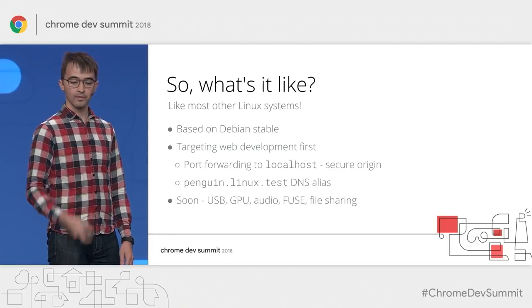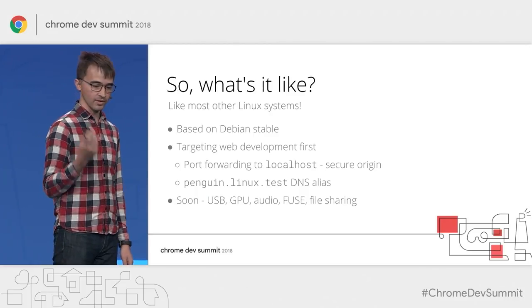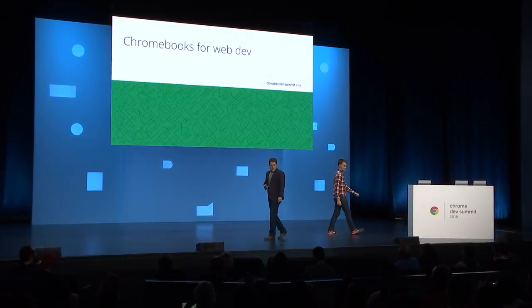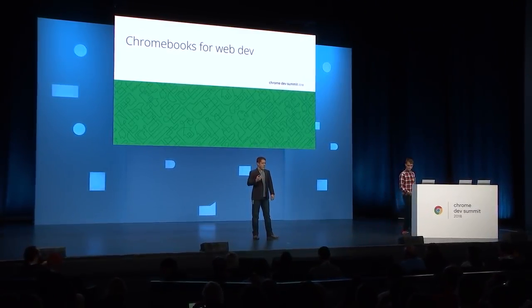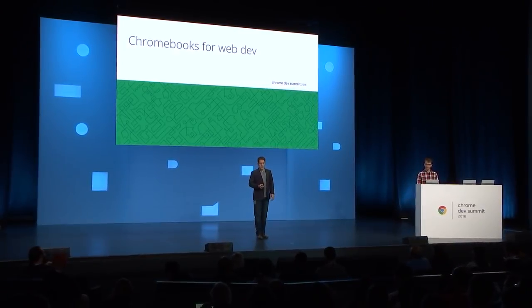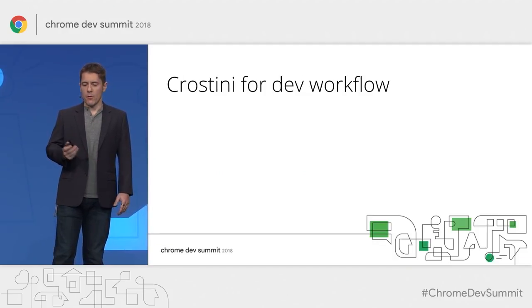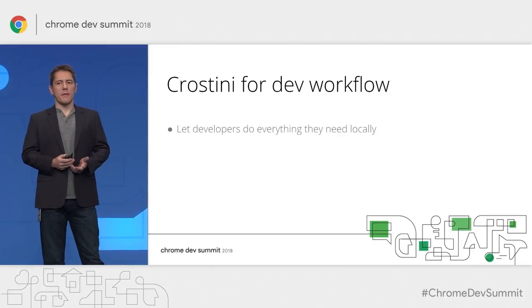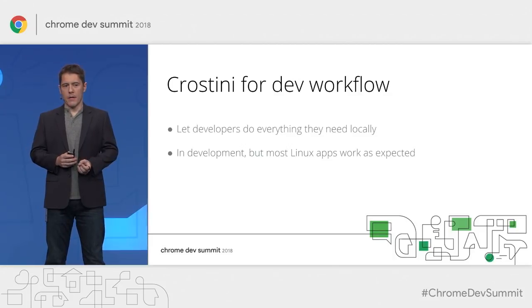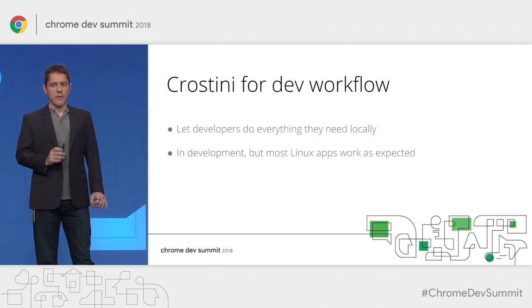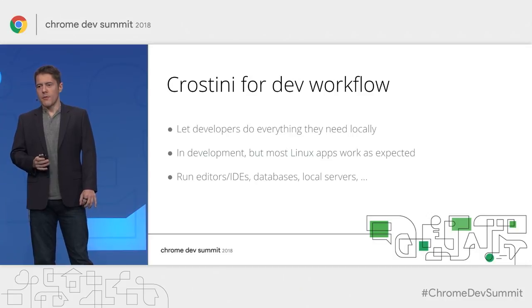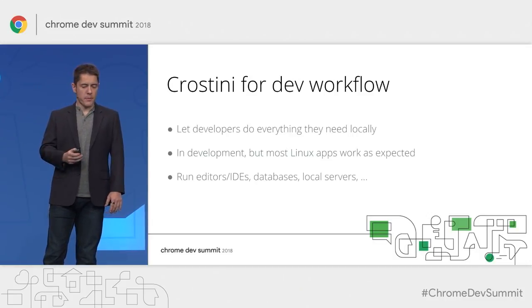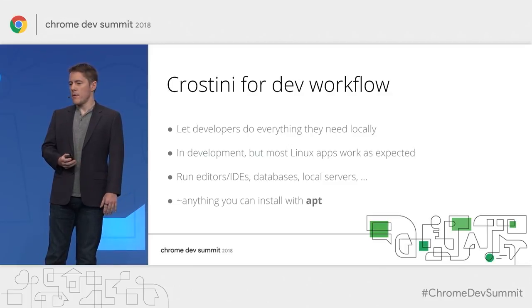Dan will now talk more about using Chromebooks for web development and show Crostini in action. Now that we know how it works and why it's awesome, let's see how to actually use it for developing web apps. The goal is to let developers do everything they need locally. Crostini support is still in development but most things work as expected — you can run editors, IDEs, databases like Mongo or MySQL, local servers, and pretty much anything you can install with apt.